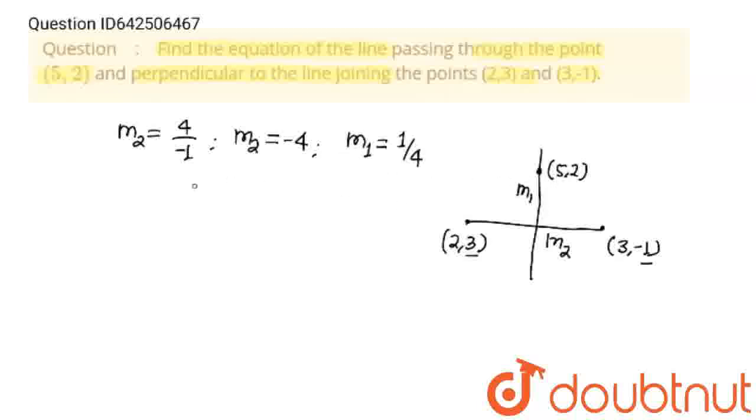So equation of this line will be (y minus 2) upon (x minus 5) is equal to 1 upon 4. And upon cross multiplication, we will get 4y minus 8 is equal to x minus 5.